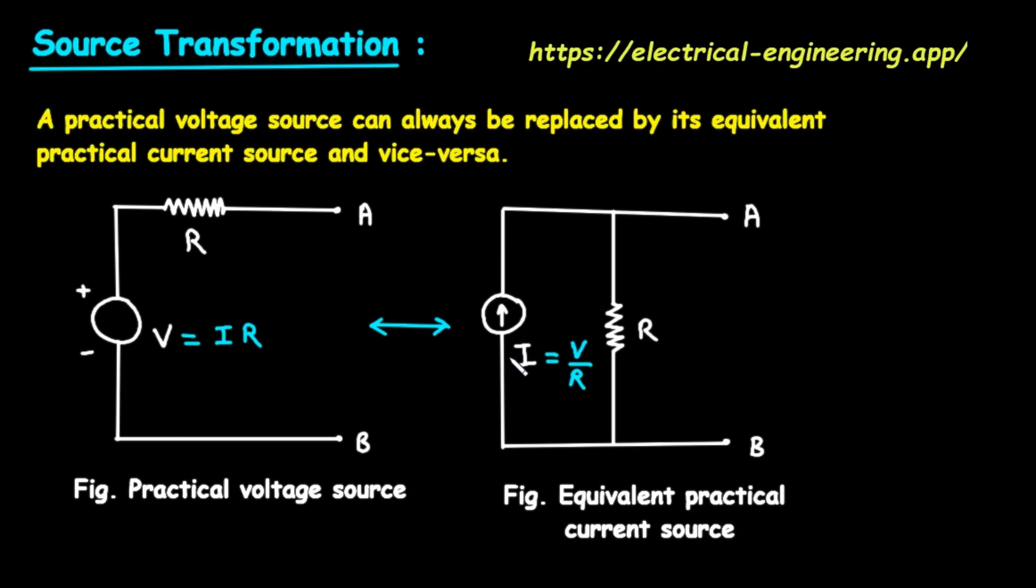Step 3, the direction of the current. This is a very important detail. Look at the original voltage source. The plus sign is at the top. The rule is, the arrow of the equivalent current source must point towards the positive terminal of the original voltage source. Since the plus sign is at the top, near terminal A, the arrow in our new current source points up.